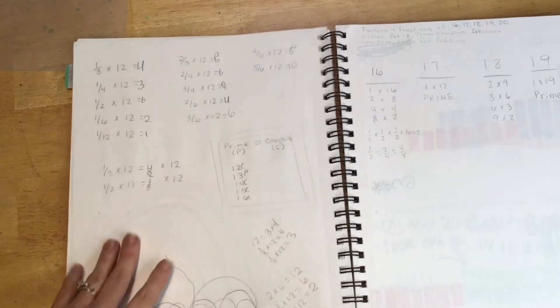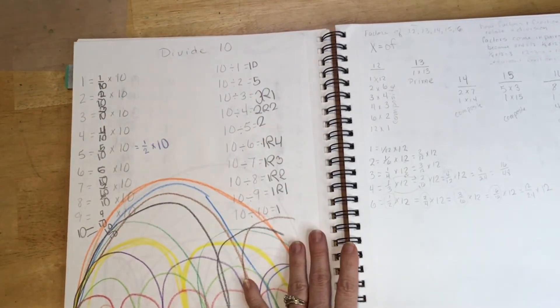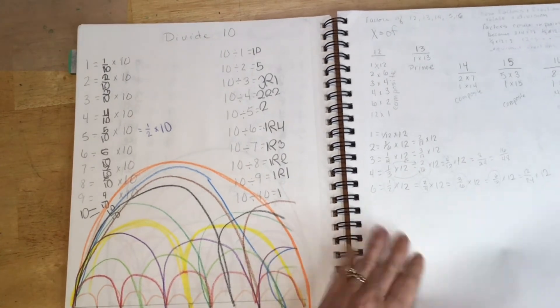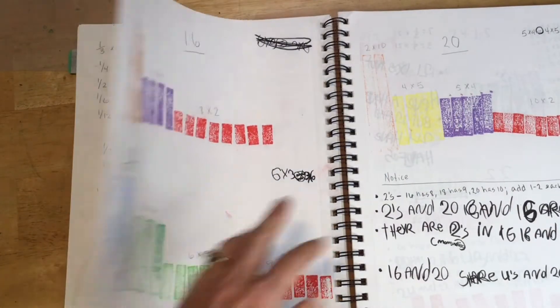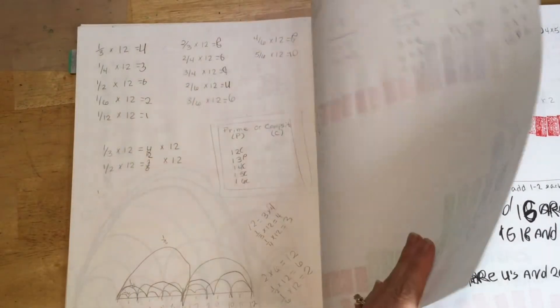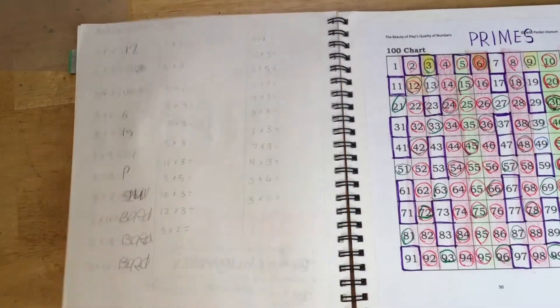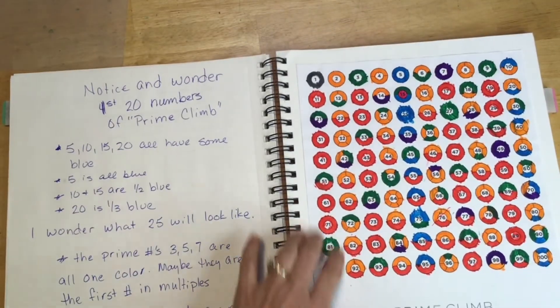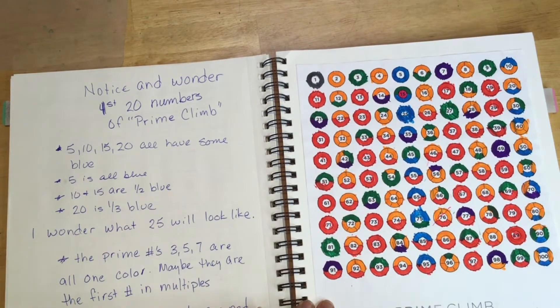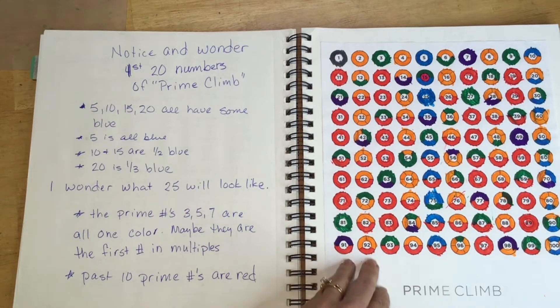And then we moved into this because the division and factoring are very much related as well as fractions. They are connected. And so we moved into fractions or not fractions, I'm sorry, factors and prime and composite numbers. We used Prime Climb and Prime Climb has a site that has math lessons on it, which is fabulous. I think that they were just ingenious to factor by color.